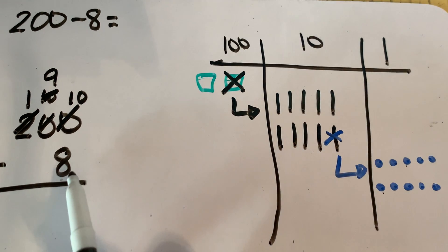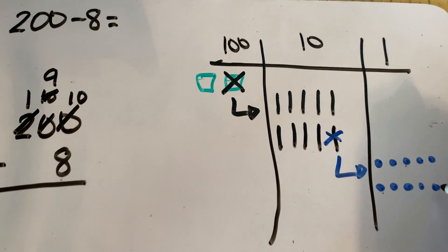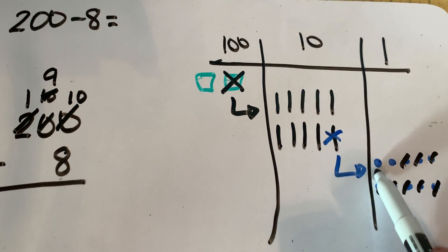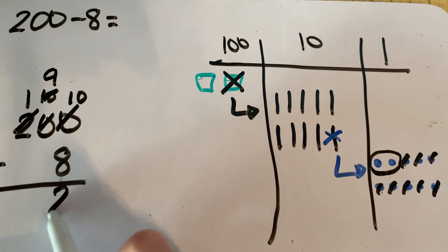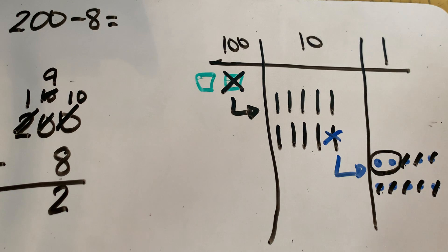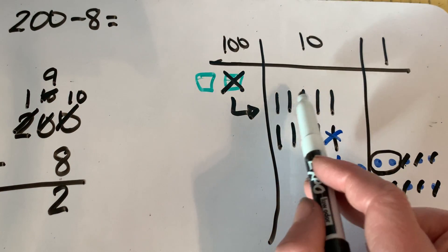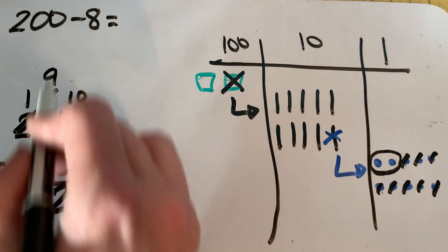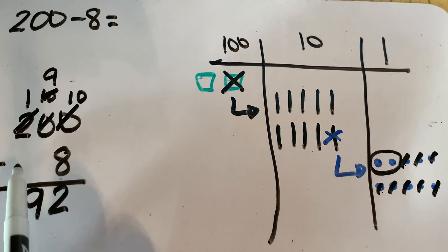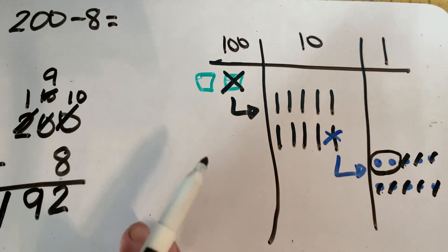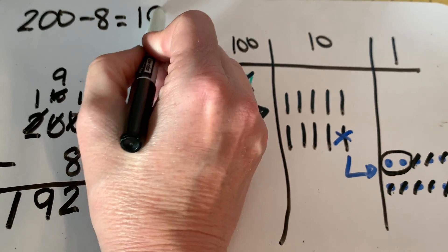Now we've got 8 ones to subtract. We had 10 ones, we took off 8 — that leaves us with 2. We had 9 tens and do we need to subtract any tens? No. So 9 tens remain. We have no hundreds to subtract, so we have 100 left. That means 200 minus 8 is 192.